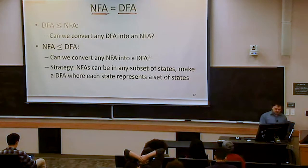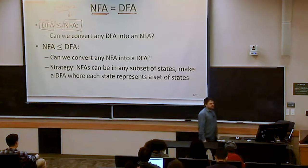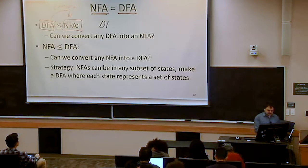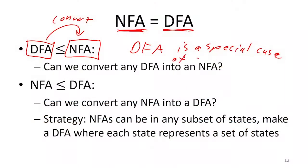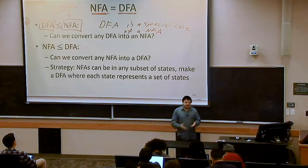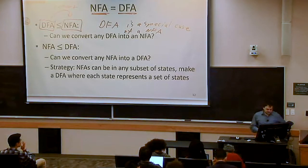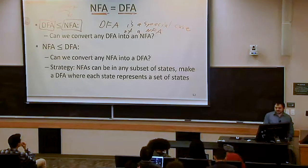To do this, we have to do two steps. We have to show that anything I can do with a deterministic finite state automaton, I can also do with a non-deterministic finite state automaton. Can we convert a deterministic finite state automaton into a non-deterministic one? A deterministic finite state automaton is a special case of a non-deterministic finite state automaton, so every DFA is already an NFA — no conversion necessary.